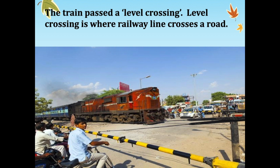After some time, the train passed a level crossing. A level crossing is where the railway line crosses a road and other vehicles are put on hold so that the train can cross, and after that the vehicles resume crossing the road.